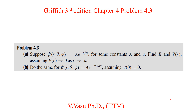Today we will solve problem 4.3, Chapter 4, Griffith 3rd edition, Quantum Mechanics Basic Concept and Applications. The problem 4.3 contains two parts. Part 1 is: suppose psi, which is a function of r, theta, and phi, is equal to A·e^(-r/a) for some constant capital A and small a.